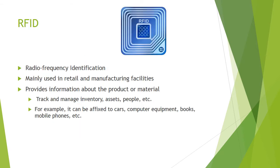Here we have radio frequency identification, commonly known as RFID. It's mainly used in retail and manufacturing facilities to streamline and simplify processes. It provides information about a product or material — whether you're shipping, buying, or selling — and is an easy way for manufacturers and businesses to manage their inventory.